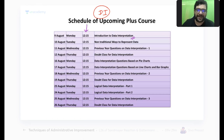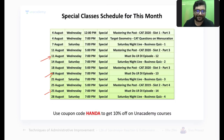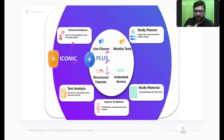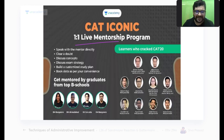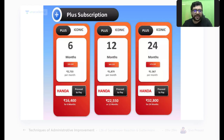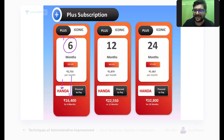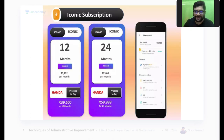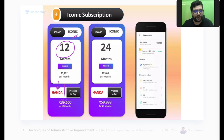My class in the Plus batch starts from Monday the 9th, covering DI from the basics. In the Iconic plan you get one-on-one live mentorship. If you are targeting CAT 2021, I recommend the Plus plan for 6 months at ₹16,400 — use coupon code HANDA for a 10% discount. If targeting CAT 2022, go for the Iconic 12-month plan at roughly ₹40,000, and again use coupon code HANDA for 10% off.